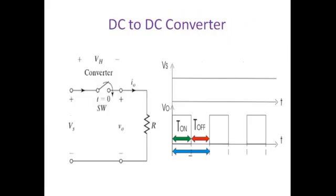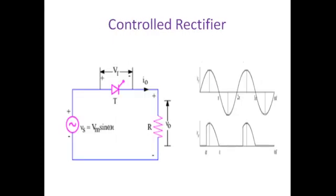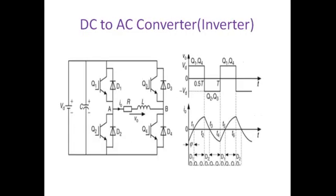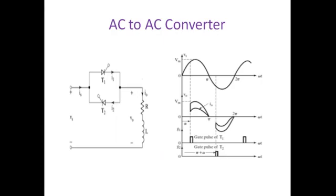In all these converters, there are switches everywhere. The important power switches available are: thyristor (Silicon Controlled Rectifier or SCR), power MOSFET, power BJT, IGBT, TRIAC, GTO, and several other devices. We will study each converter in detail. In the next class, we will learn about one simple but important power switch — the Silicon Controlled Rectifier (SCR) — which is an old but still widely used device in high-power applications.